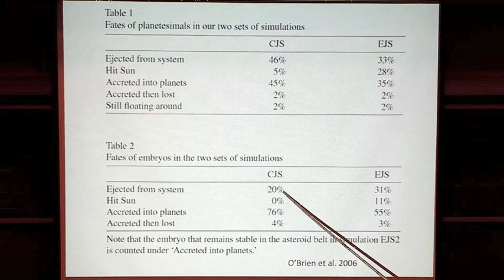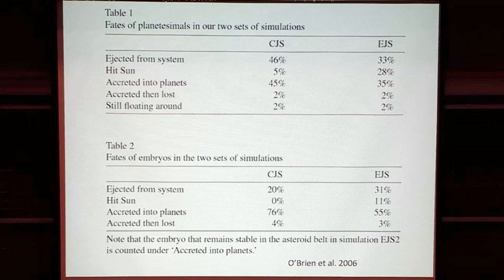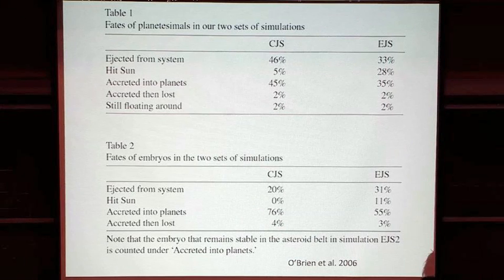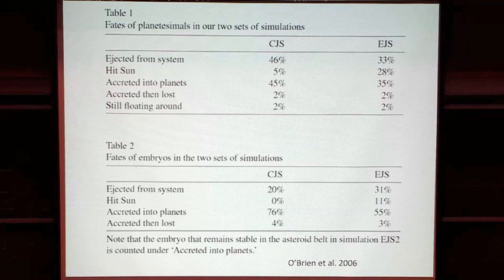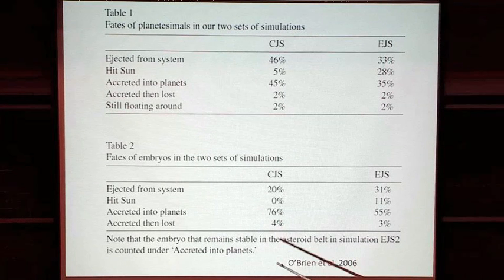In response to a question about where the lost material goes: typically in these simulations, if material is thrown out of the semi-major axis range of the annulus they care about, or if it's going to intercept the sun, they remove it. Something interesting could happen later to bring it back, but for the purpose of these calculations it's ejected. A geochemical perspective would ask whether the loss is very early, since late loss is much more mechanically interesting. This is just tracking initial planetesimals and their final fate.